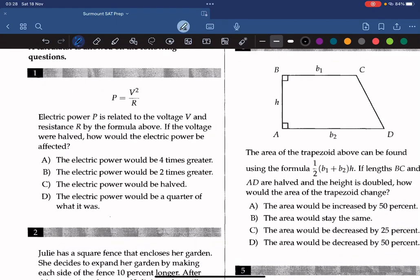So let's look at the first one here. We are given this equation, and the question states that the electric power P is related to the voltage V and resistance R by the formula above. If the voltage were halved, how would the electric power be affected?